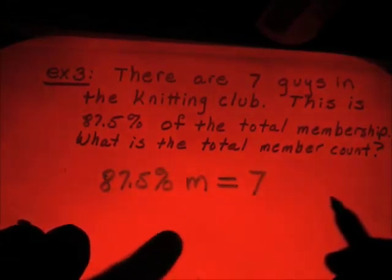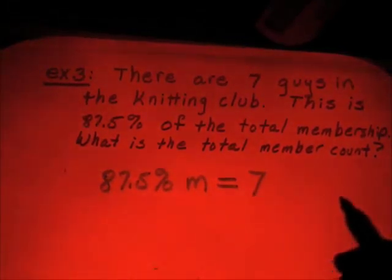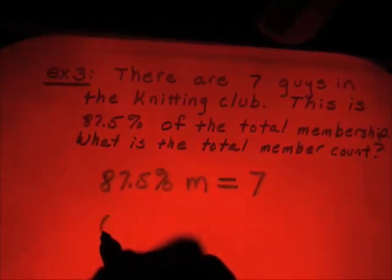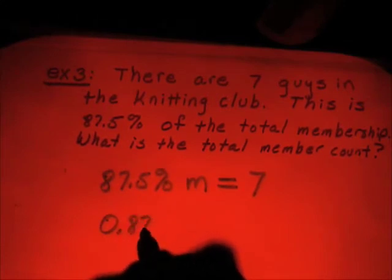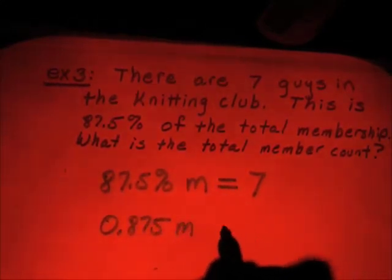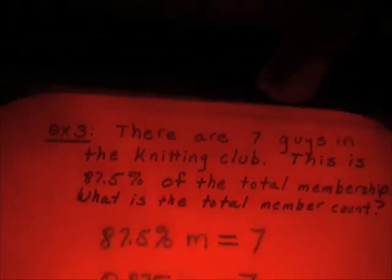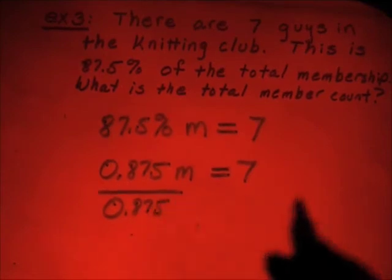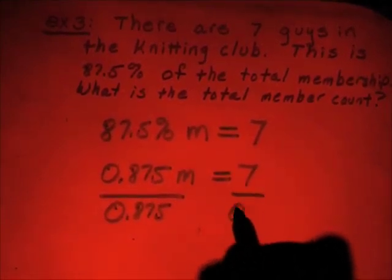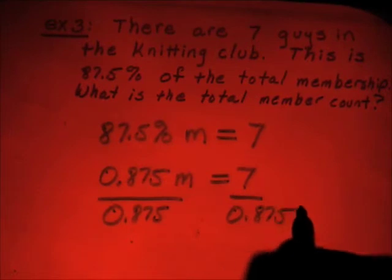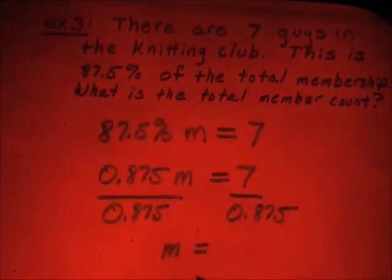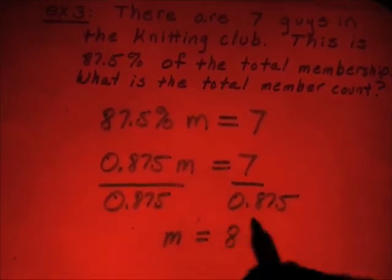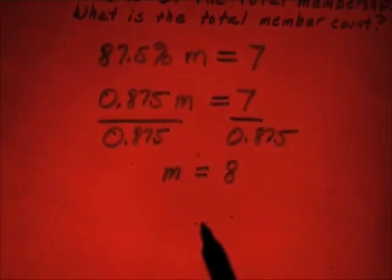We got some guys out there knitting. Now, 87.5% written as a decimal, of course, would be 0.875 times the total membership is equal to seven. Let's go ahead and divide both sides by 875 thousandths. Anybody have an answer for me yet? Anybody have an answer yet? So the total. Oh my gosh. How many girls are in this club? One.